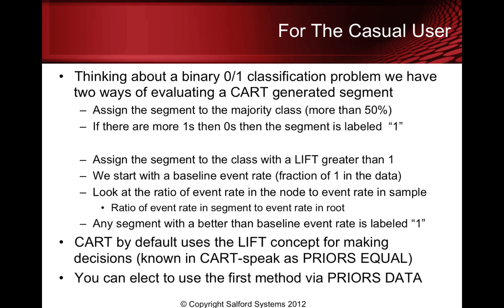People sometimes think about relative risk instead. We have a baseline event rate — that's the fraction of the ones; usually we use one to refer to the rarer event in the data. We look at the ratio of the event rate in the node in question to the event rate in the whole sample. Any segment with a better than baseline event rate is going to be labeled a one, or belonging to the rare class, and a zero otherwise. CART uses this latter concept, the lift-related concept, for making decisions. We call this, in CART terminology, priors equal.